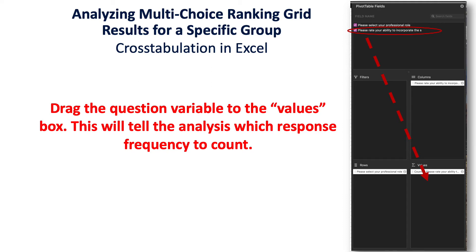What we will do is drag the question variable to the values box, which tells the analysis which response frequency to count. We don't want it to count how many professionals were professionals — that would just give us sample size, which we already know. We want to know how many of each group selected a particular response. So we drag down the question — in this example, 'please rate your ability' — into the values box. Think of it as dragging down your independent variable into values, because that's what we're measuring.